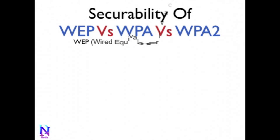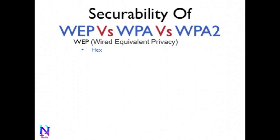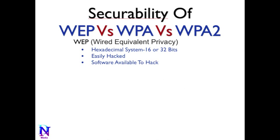WEP means Wired Equivalent Privacy. It was the first type of security code necessary to gain access to a local area network. The passwords are assigned using a 16 or 32-bit hexadecimal numbering system. The problem with WEP is that it's easily hacked, and software is available online to help people hack into systems.